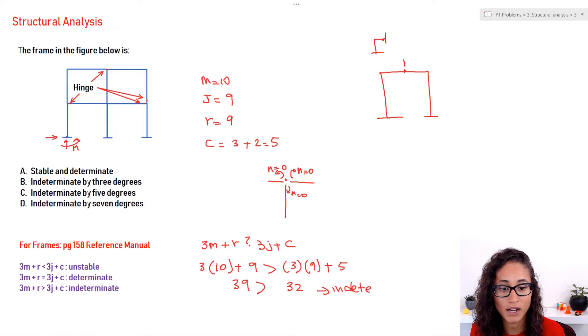And to find the degree of indeterminacy is actually really easy. It's exactly how we did with trusses. It would just be 39 minus 32, which equals to 7. So the answer is going to be D. It's indeterminate by 7 degrees.